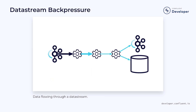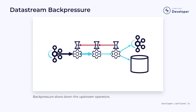In our data streams, we have a similar problem. If we have a portion of our stream that's too slow, it can cause data to build up. If we let that happen unchecked, eventually our application would fail. Thankfully, Flink supports end-to-end back pressure. If an operator is slow, Flink will prevent upstream operators from sending more data. This back pressure can propagate through the system all the way back to the source, helping prevent catastrophic failures.